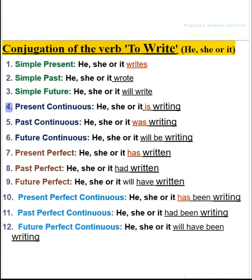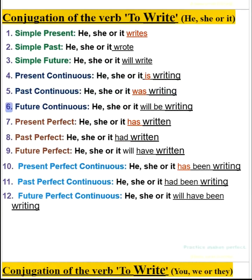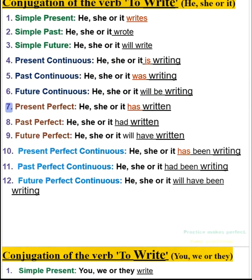4. Present continuous: he, she or it is writing. 5. Past continuous: he, she or it was writing. 6. Future continuous: he, she or it will be writing.